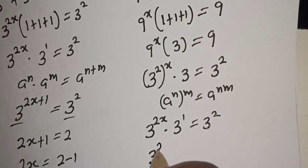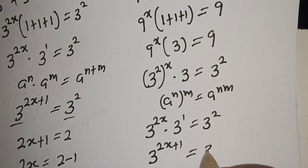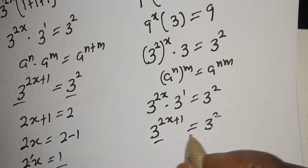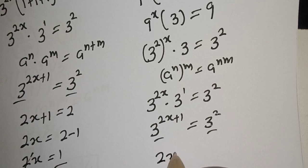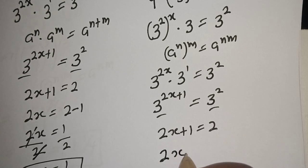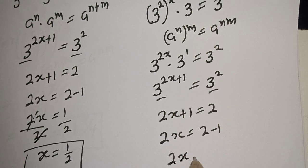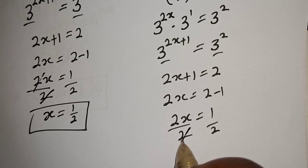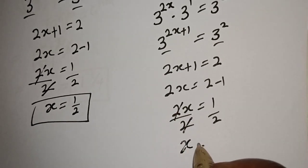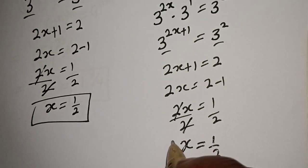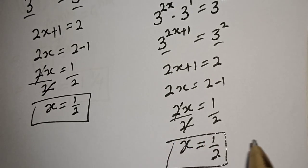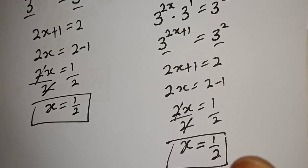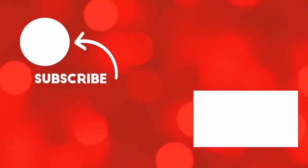This becomes 3 raised to power 2s plus 1 equals 3 squared. Since they have the same base 3, we get 2s plus 1 equals 2, so 2s equals 1. Dividing both sides by 2 gives s equals 1 over 2. This is the final answer. If you enjoyed the class, please don't forget to like, share, comment, and subscribe. Thank you, bye.